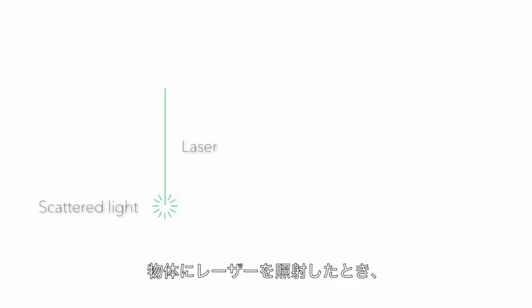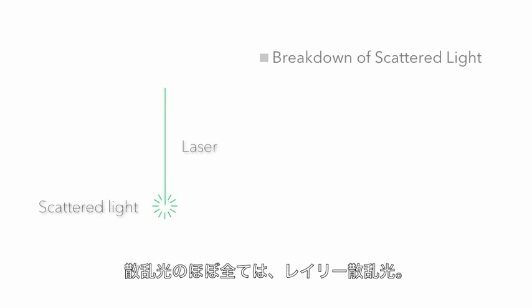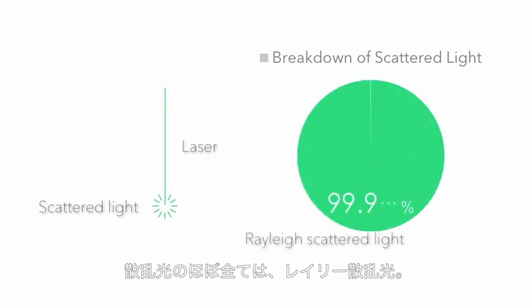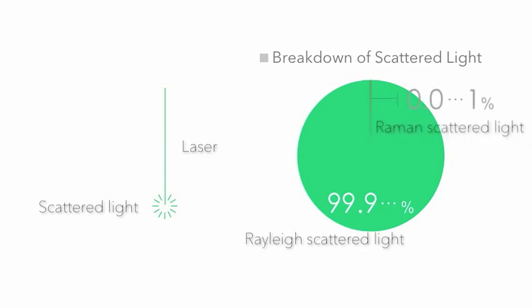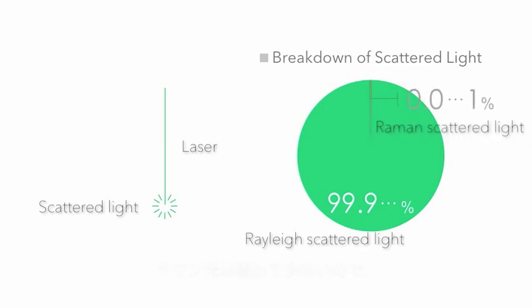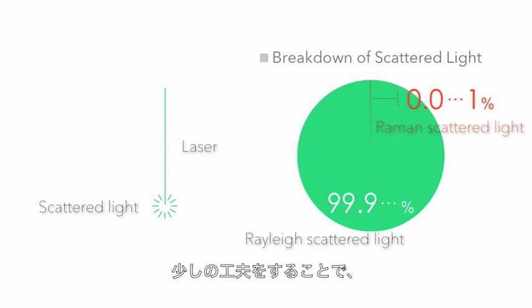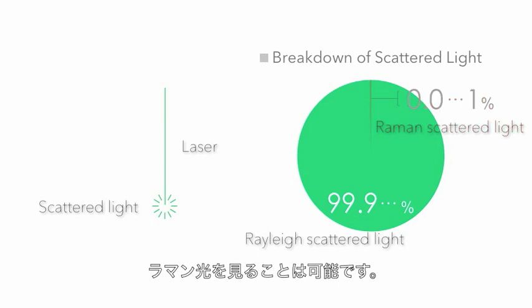When a substance is exposed to laser light, nearly all of the scattered light produced is Rayleigh scattered light. However, a very small percentage is Raman scattered light. Because the percentage is so small, this light is invisible to the naked eye. However, with the use of certain tools, this light becomes visible.